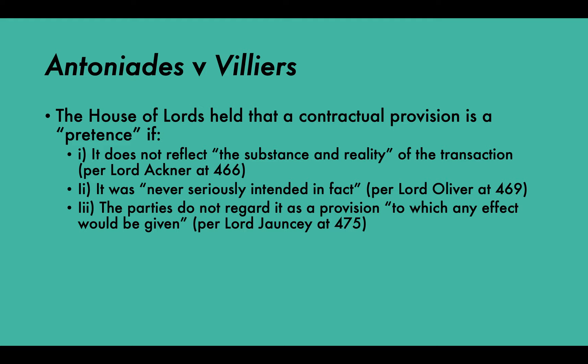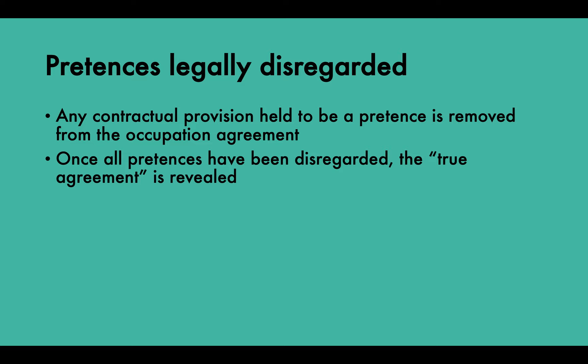Pretence is legally disregarded. Any contractual provision held to be a pretence is severed from and removed from the occupation agreement — it is completely removed and ignored. Once all pretences have been disregarded, the true agreement is revealed. So if you've got a contract with a sham device in it to circumvent the Rent Acts, that provision will be disregarded and then the true agreement between the parties is revealed.